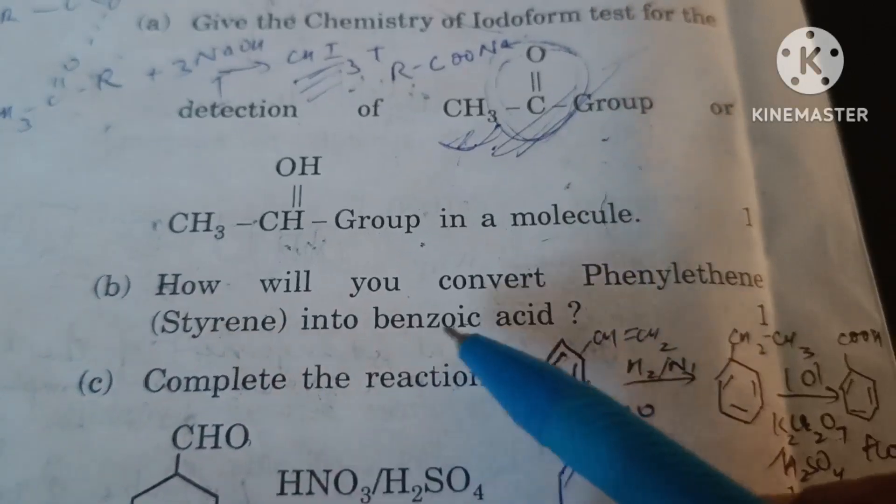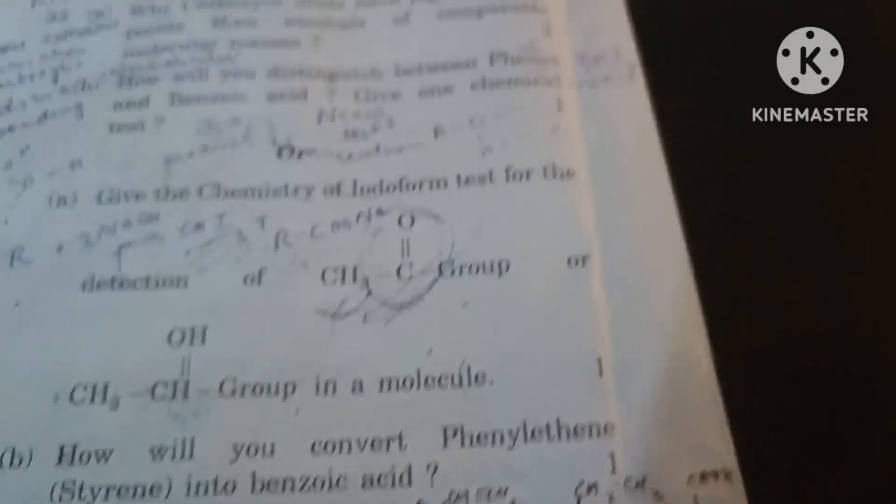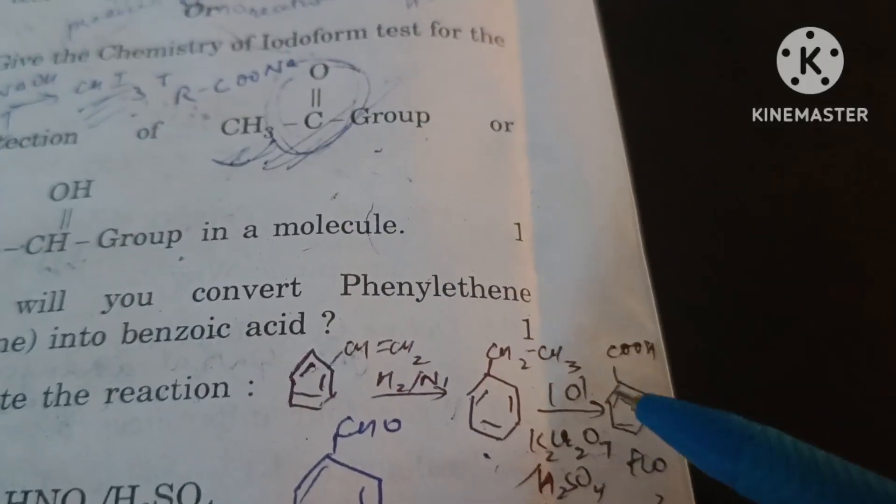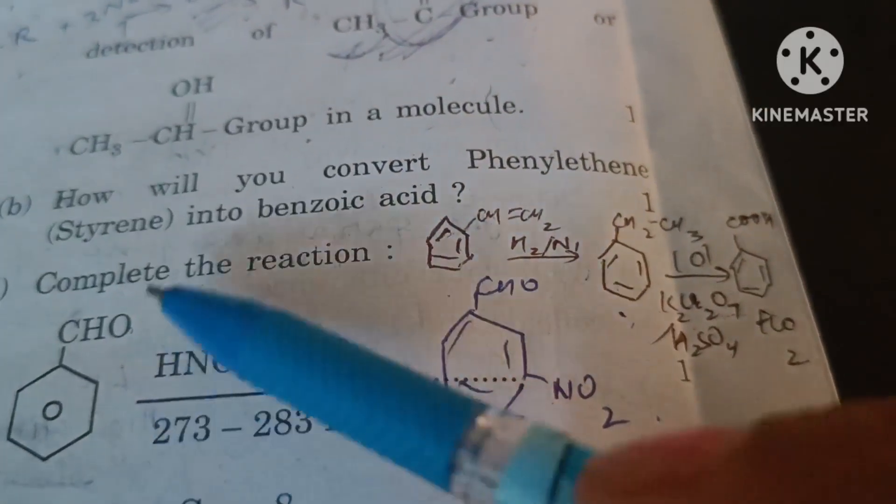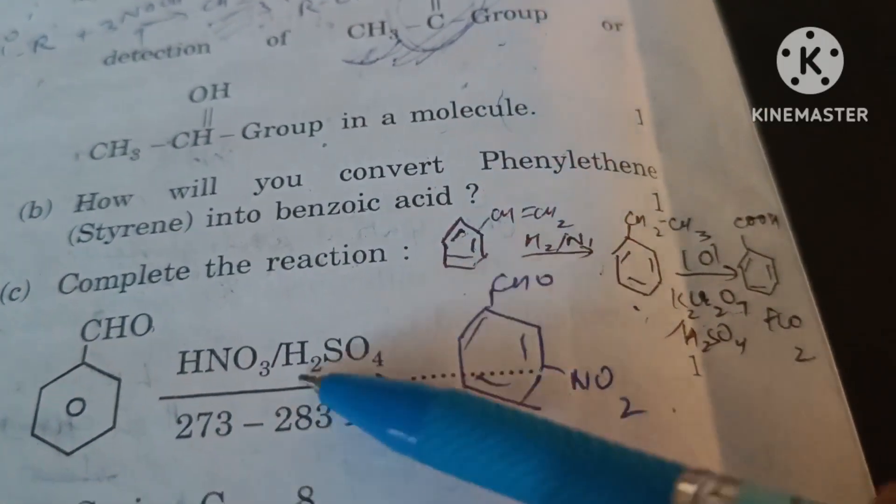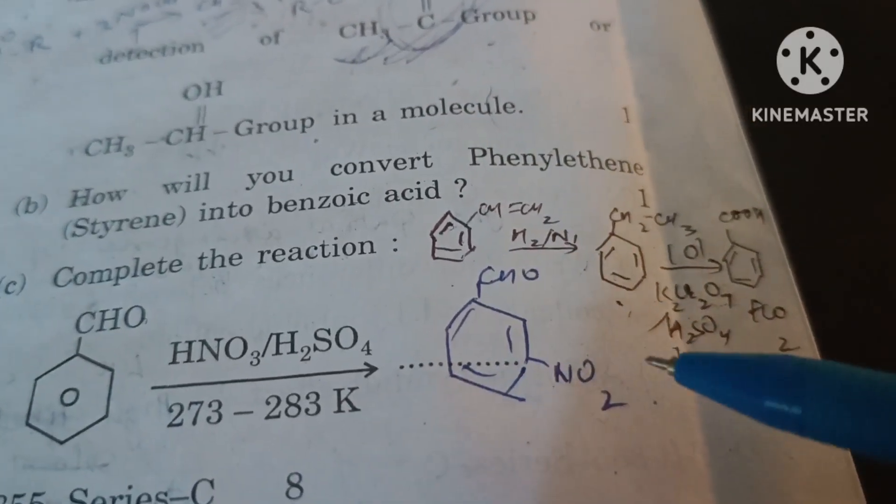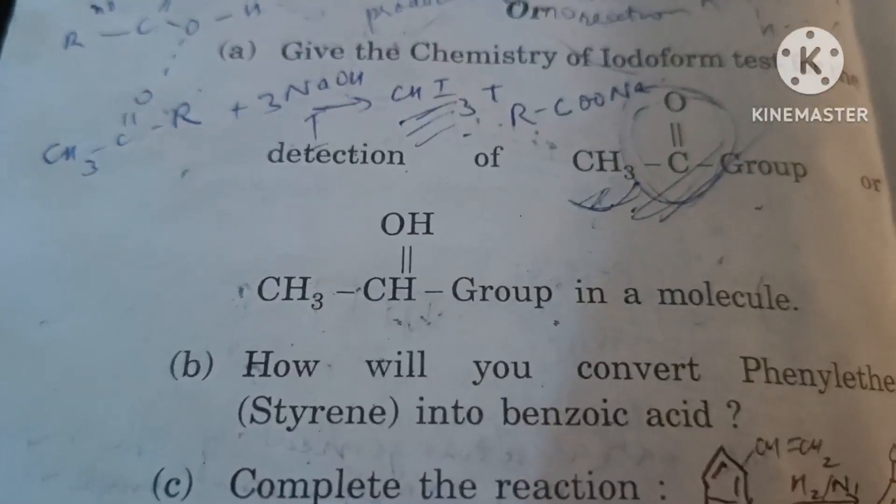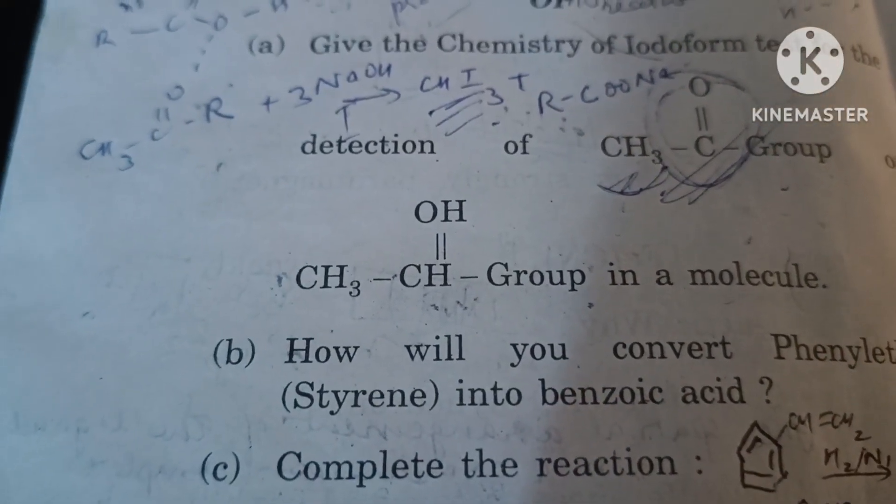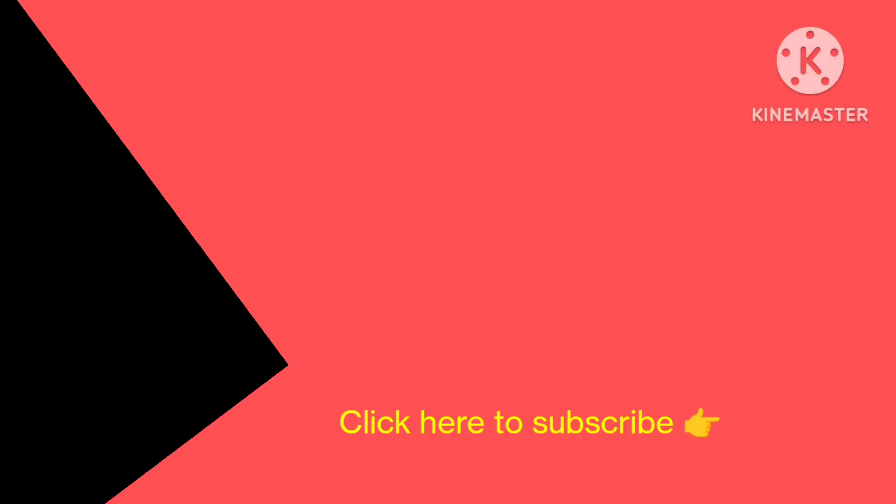How will you convert phenylethene or styrene into benzoic acid? We reduce it with hydrogen nickel to form an alkyl benzene and then oxidize it into benzoic acid. If we react benzaldehyde with nitric acid and sulfuric acid mixture, nitration occurs at meta position and meta-nitrobenzaldehyde is formed. That's all in today's video. If you like the video please do share and subscribe. Thank you, have a nice day.